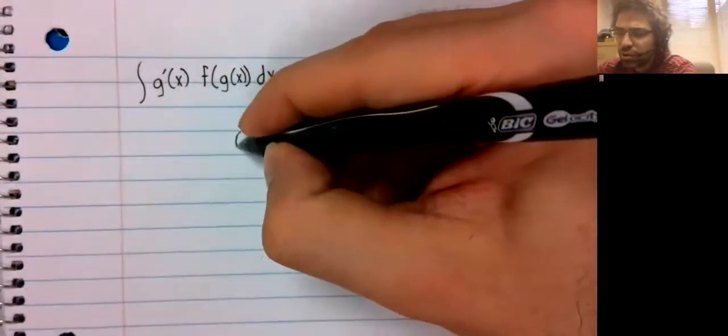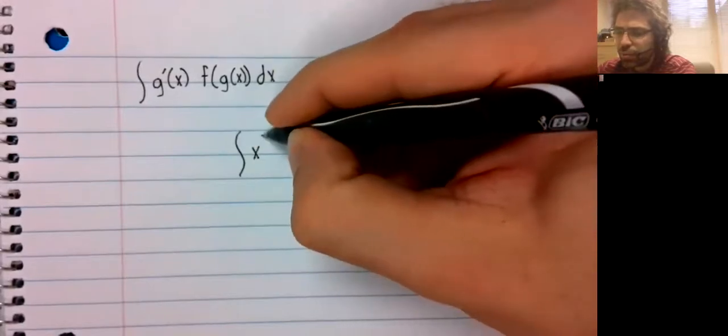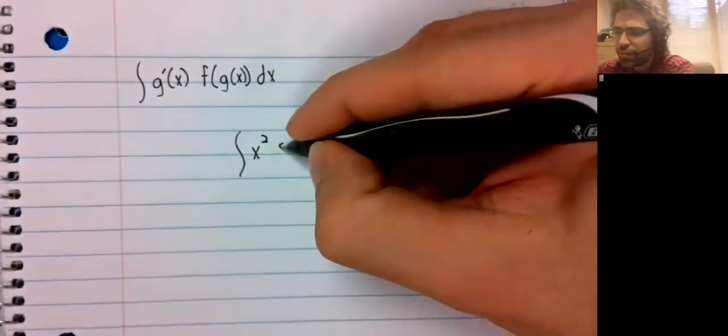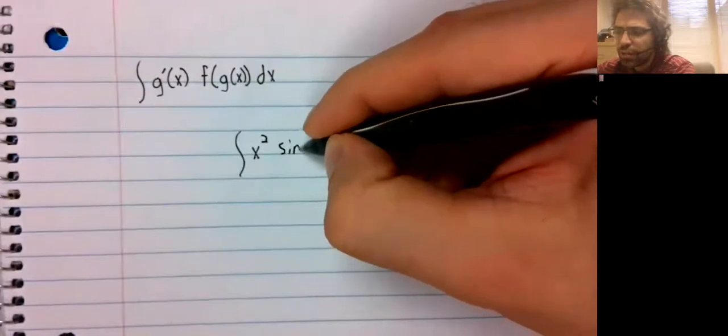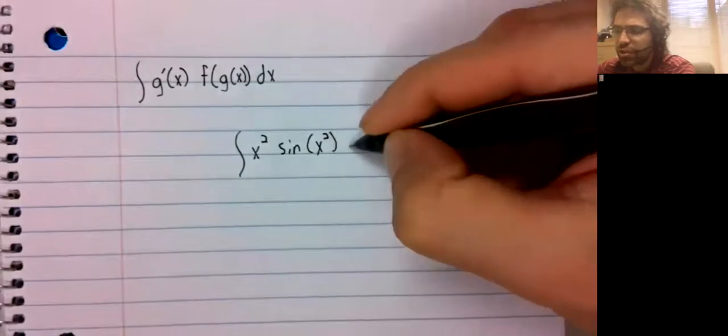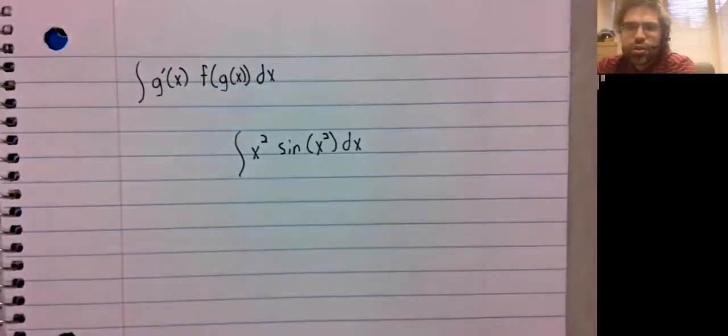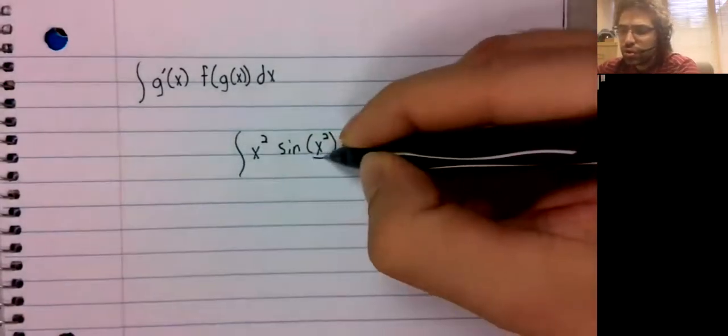So suppose you have x squared times the sine of x squared. You cannot use U-substitution.